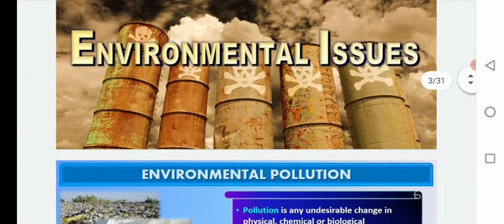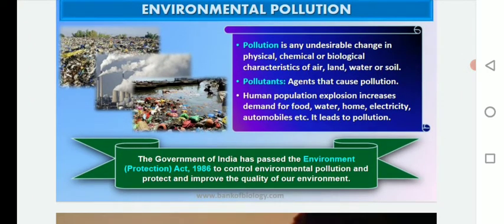So what is meant by pollution? Pollution is an undesirable change in the environment due to human activities. More specifically, pollution is an undesirable change in the physical, chemical, or biological characteristics of air, land, water, or soil. The agents that cause pollution are known as pollutants.